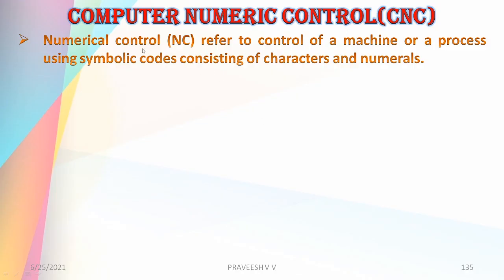Before going to computer numeric control, we will see what is numerical control. Numerical control refers to control of a machine or a process using symbolic codes consisting of characters and numerals. Symbolic codes means codes involving characters and numerals only.